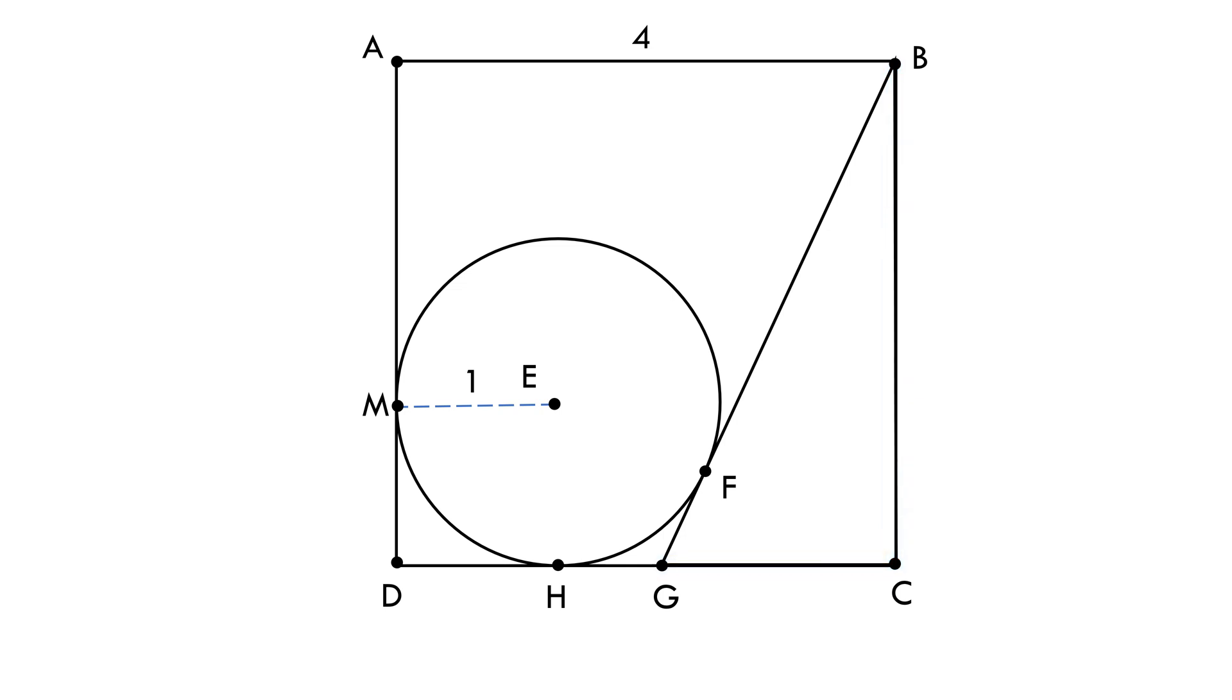So what we'll do here is join points B and D. Now we must understand that points B, E and D will be collinear as both lines DE and BE make 45 degrees with the horizontal line DC.